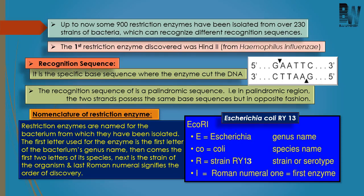Each restriction enzyme will have its own recognition sequence, and that recognition sequence should be arranged in a palindrome. Now coming to the nomenclature of restriction enzymes — that is, about the naming of the enzymes. Every enzyme is named after the organism from which the enzyme has been isolated.